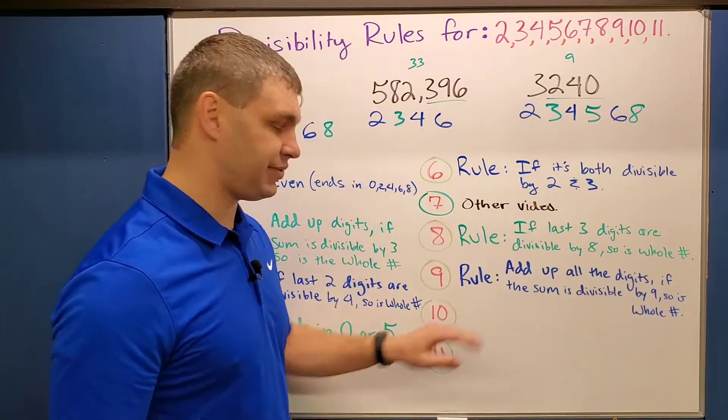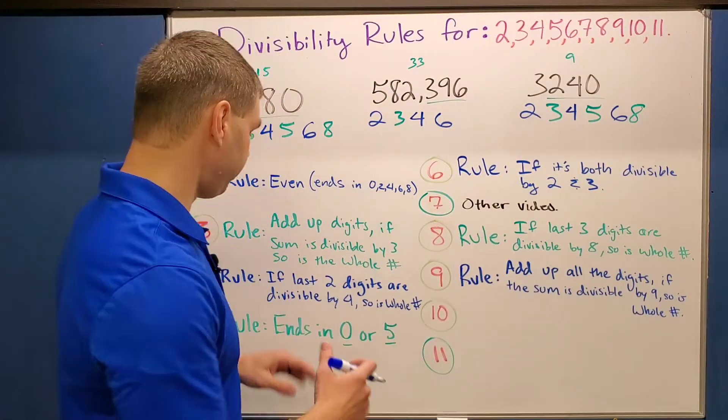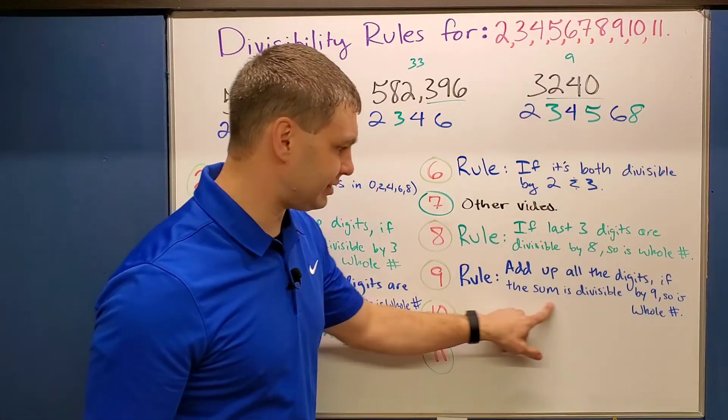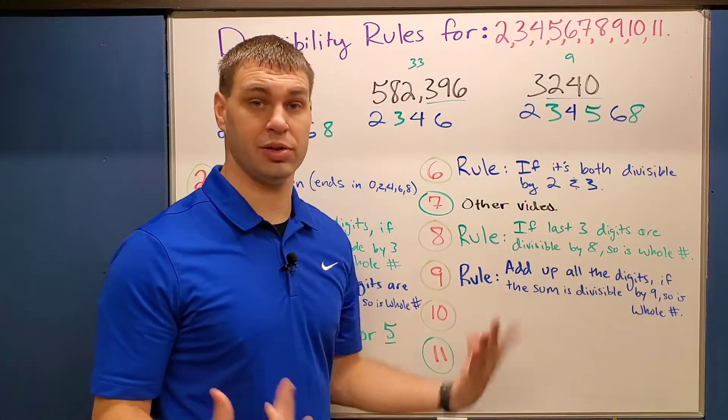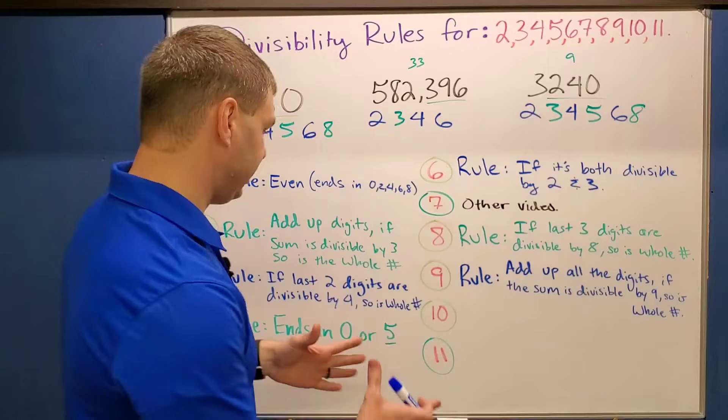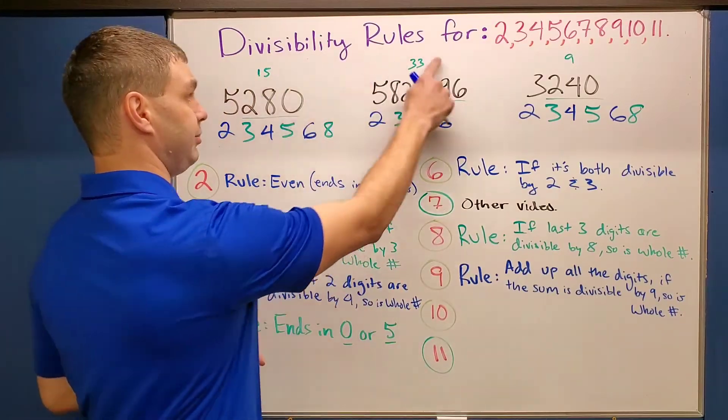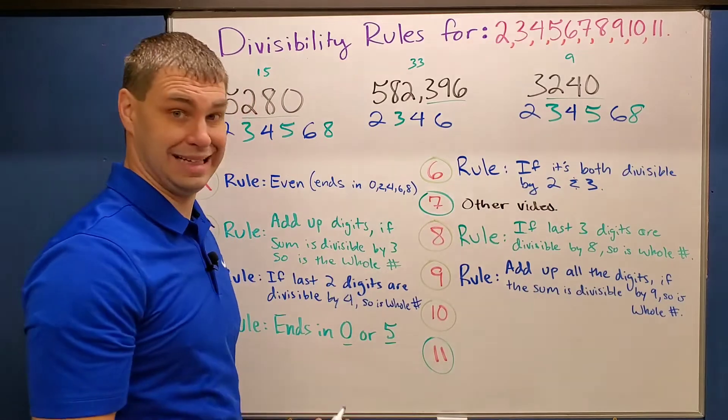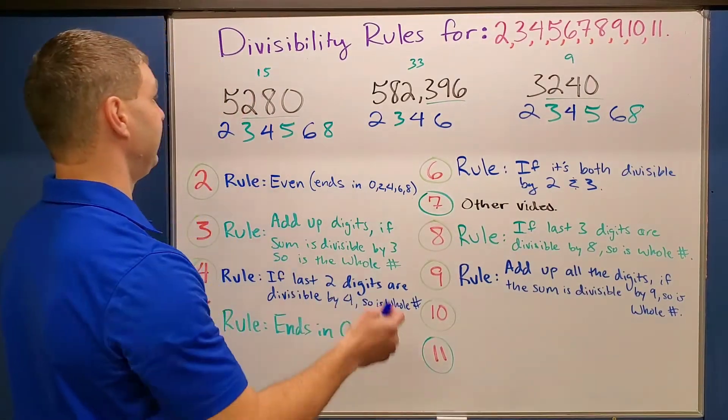The divisibility rule for nine is very similar to our divisibility rule for three, which says if we add up all of our digits and find their sum, then that sum, if it's divisible by nine, then so is our whole number. So, when we did it for three, we found those sums already, so I can just use those, and see if those are divisible by nine, and if it is, then the whole thing will be divisible by nine.